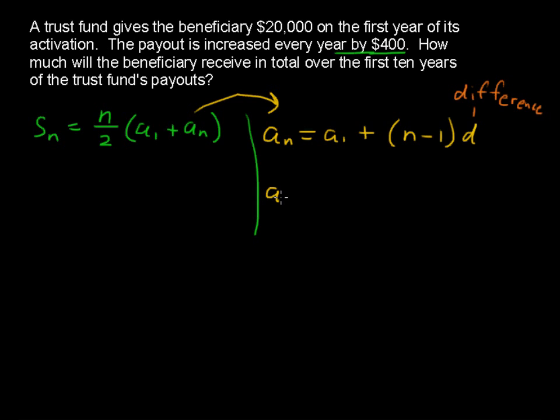So let's take a look at a sub 10. a sub 10, the tenth term, equals this $20,000, plus 9, that's the 10 minus 1. So 9 times the difference of $400. So it's $20,000 plus $3,600. So the tenth term equals $23,600.